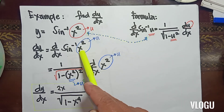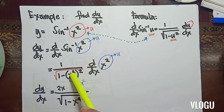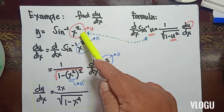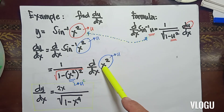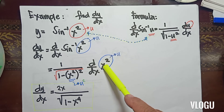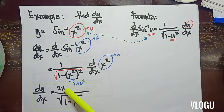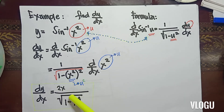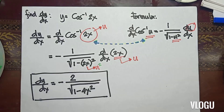Since u is equivalent to x squared, you will have x squared raised to the 2nd power. The derivative of u — u equals x squared — gives us 2x. And x squared raised to 2 is x to the 4th. So our final answer is dy/dx equals 2x over the square root of 1 minus x to the 4th.